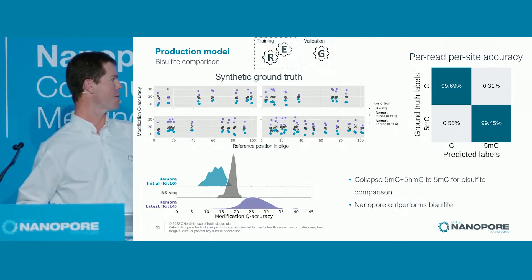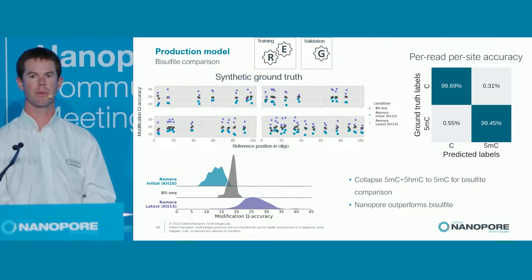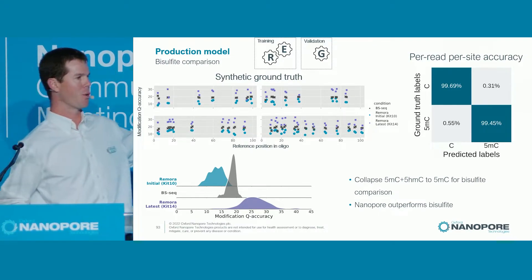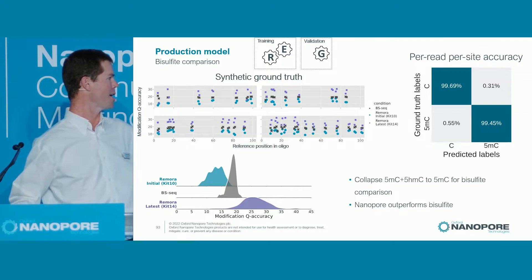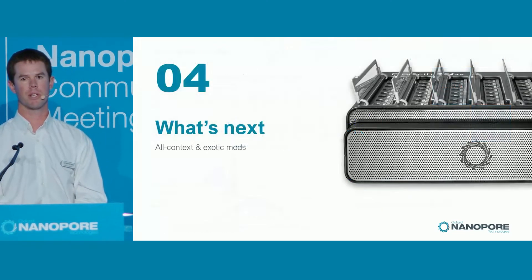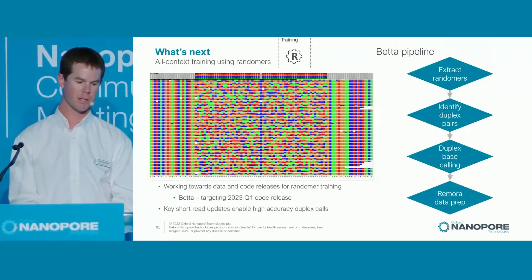We're pushing forward to running one Remora model as the model that rules them all. We have significantly passed bisulfite sequencing accuracy and are pushing from R9/Kit 10 over to the Kit 14 models, where we see really good accuracy on modified bases.